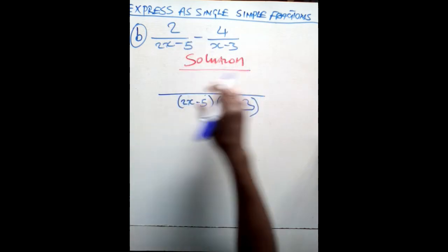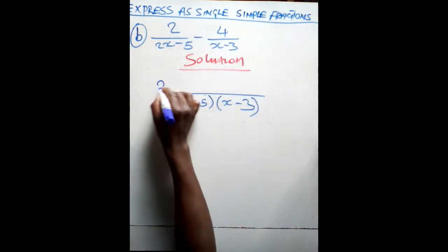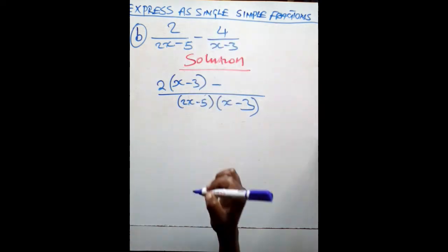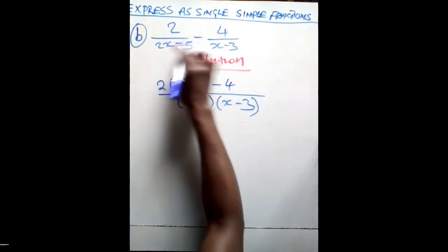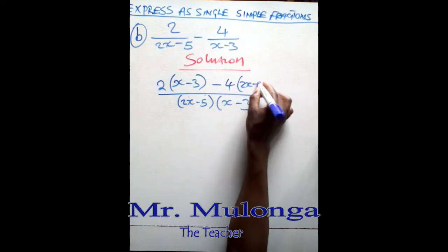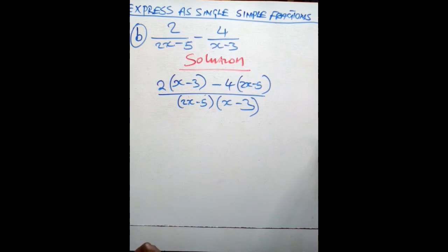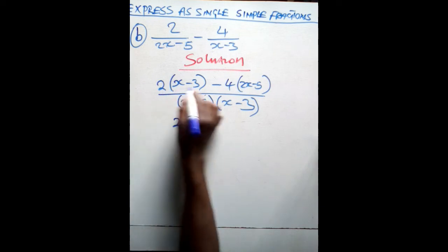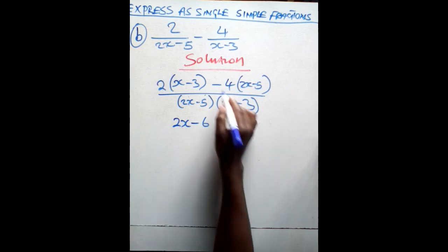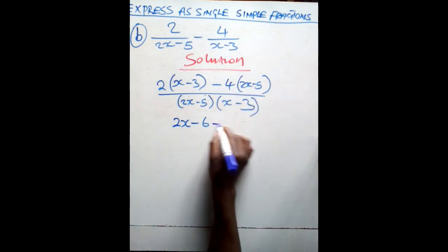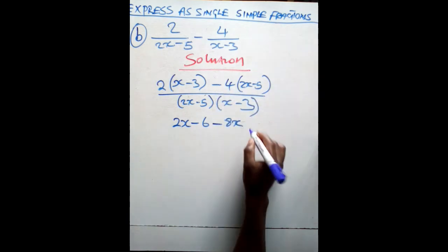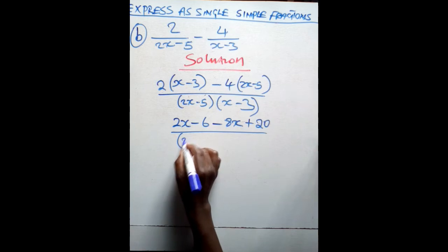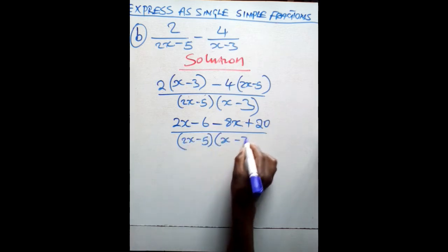After doing that, cross multiply for your numerator. So you have this 2 cross multiply — it will multiply (x minus 3) — then minus, this minus comes from the operation, then 4 will multiply (2x minus 5). From there, open the brackets in the numerator. 2 times x will give you 2x. 2 times negative 3 will give you negative 6. Then negative 4 times 2x will give you negative 8x. Negative 4 times negative 5 will give you positive 20. Then write the same denominator: (2x minus 5)(x minus 3).